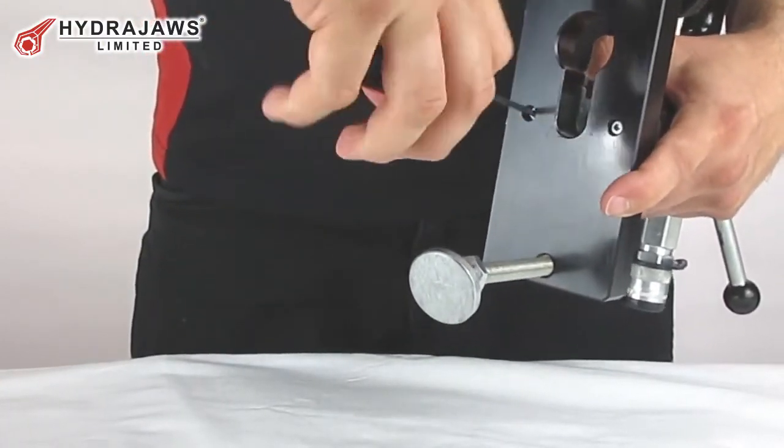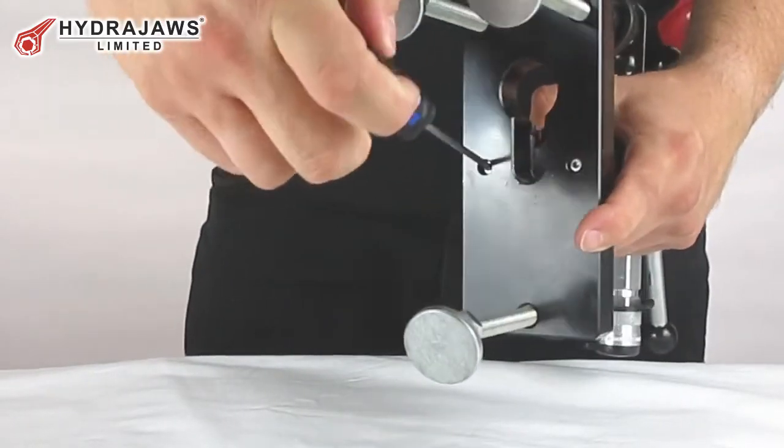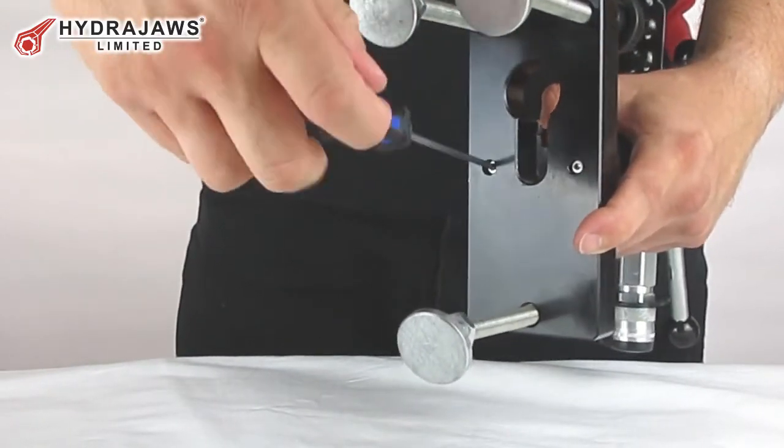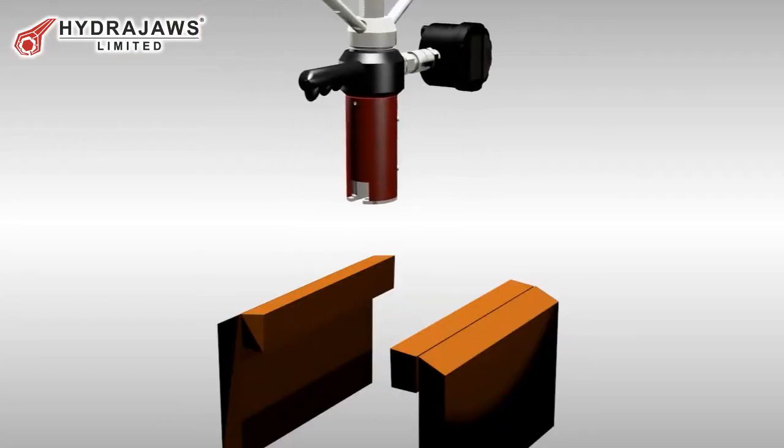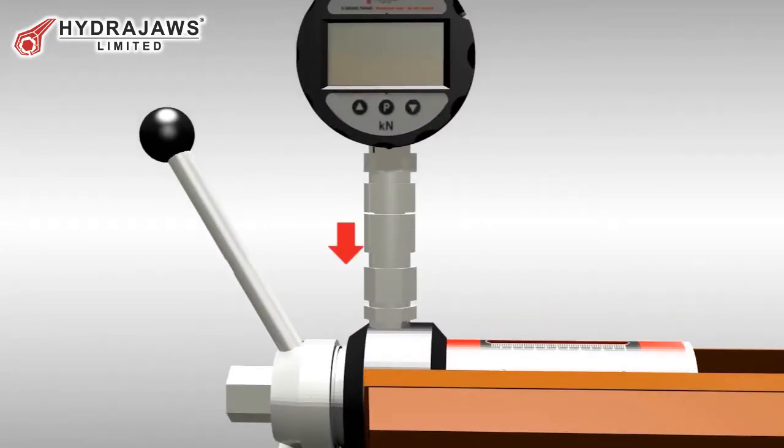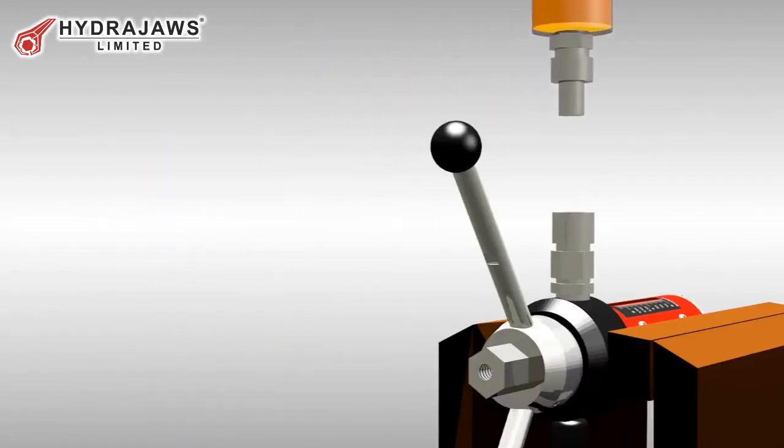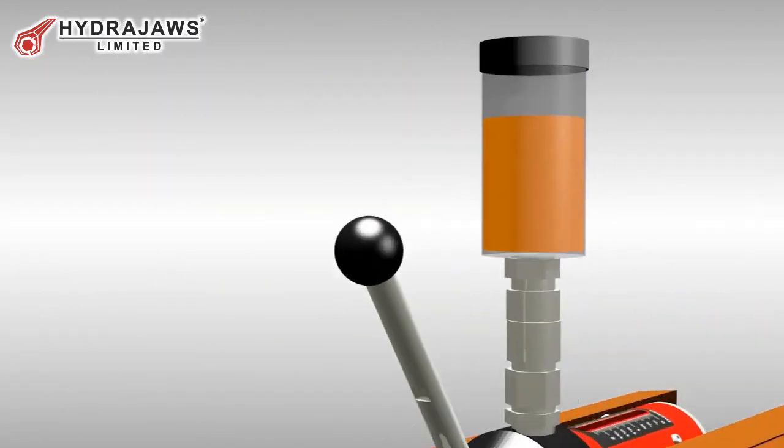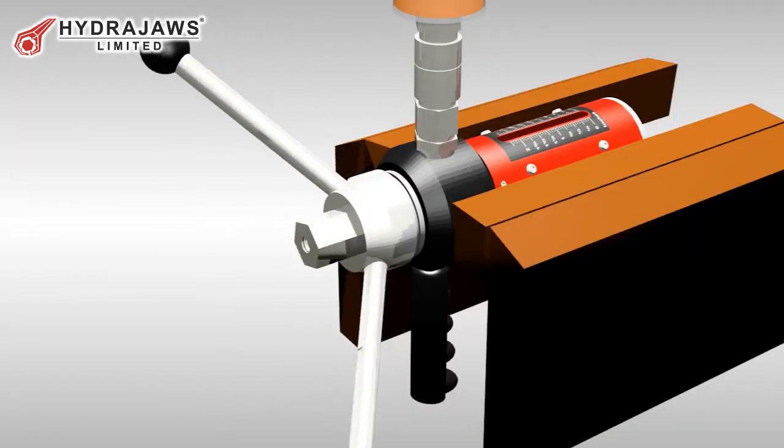Remove the tester. Secure the tester in a vice or other suitable holding device with the coupler in a vertical position. Disconnect the gauge using the quick release coupler.